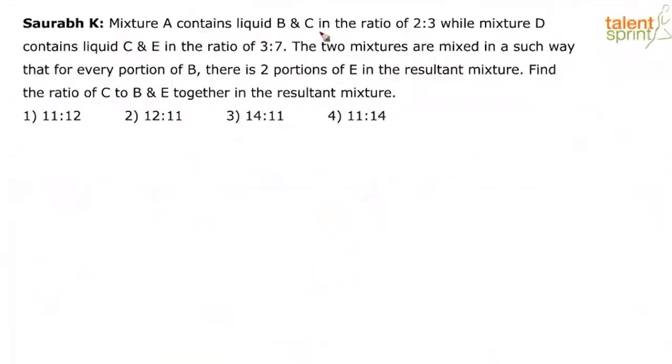This mixture A contains liquid B and C in the ratio of 2 is to 3, while mixture D contains liquid C and E in the ratio of 3 is to 7. So there is a mixture A which contains B and C in 2 is to 3 ratio, then there is mixture D which contains liquids C and E in 3 is to 7 ratio.